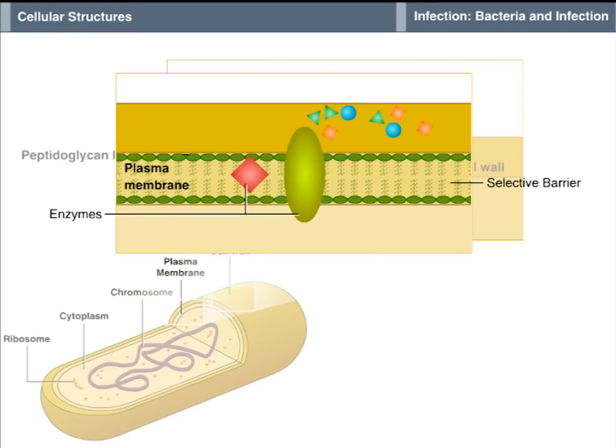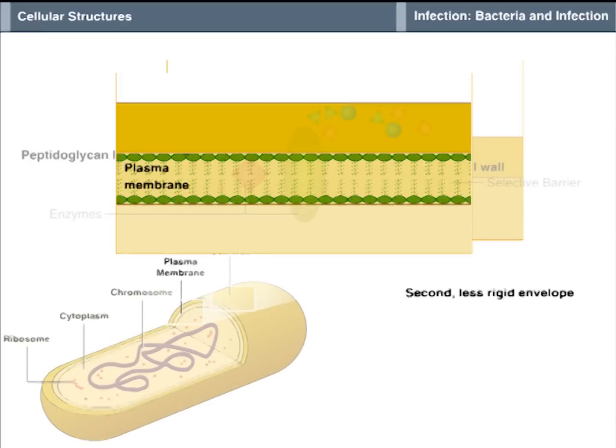Just inside the cell wall is a second, less rigid envelope, the plasma membrane, sometimes called the inner membrane or cytoplasmic membrane, which encloses the cell contents. In bacterial cells, the plasma membrane has two primary functions.